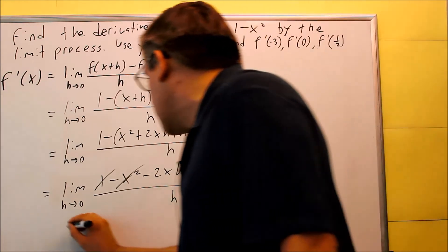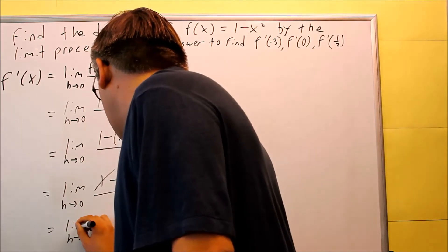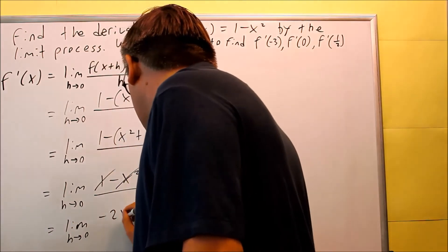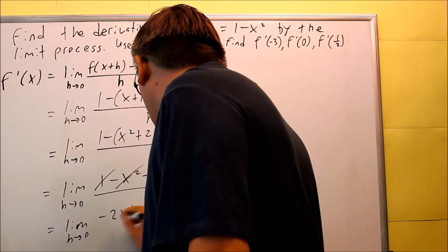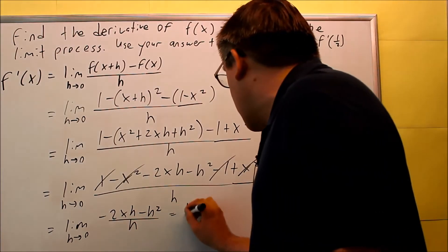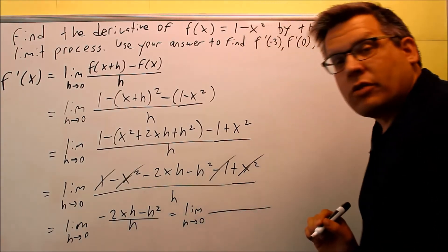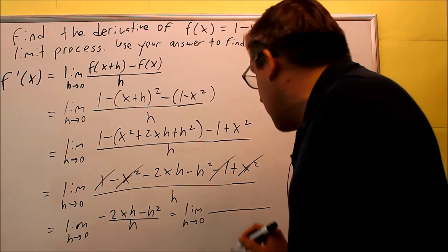So what I'm left with is limit as h goes to 0, and then I have minus 2xh minus h squared, all that's going to be over h. Now what you want to do is you want to factor out the h from the top because then you can cancel it on the bottom.